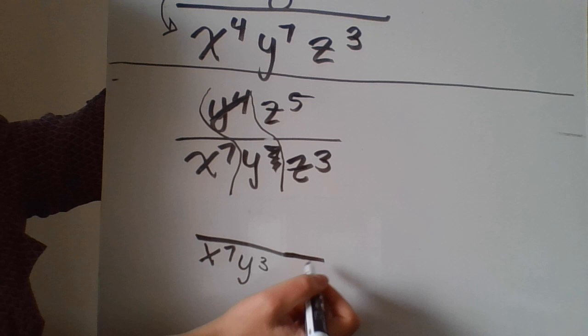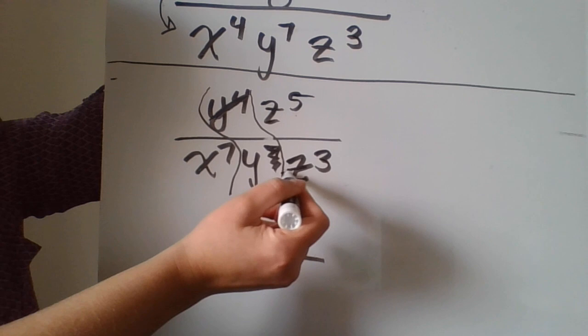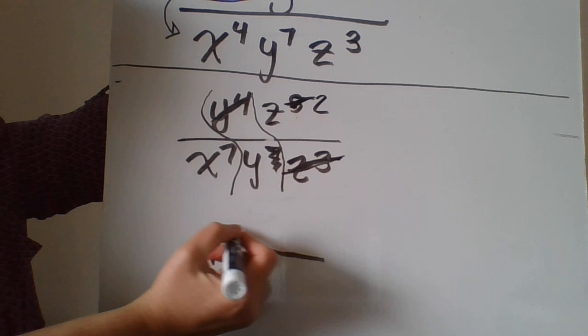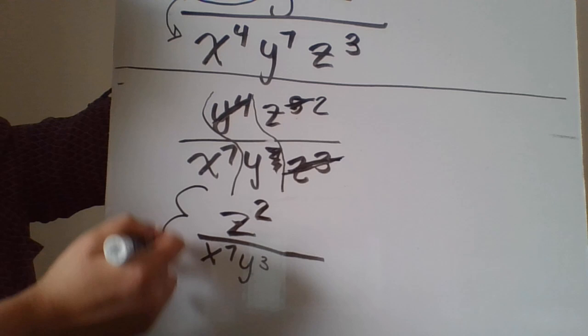And then here I have five z's up here and only three z's down here. So all three of these are going to be gone. And I'm going to take three out of here and make that a two. So this is now going to become z to the second power. And my final answer is this.